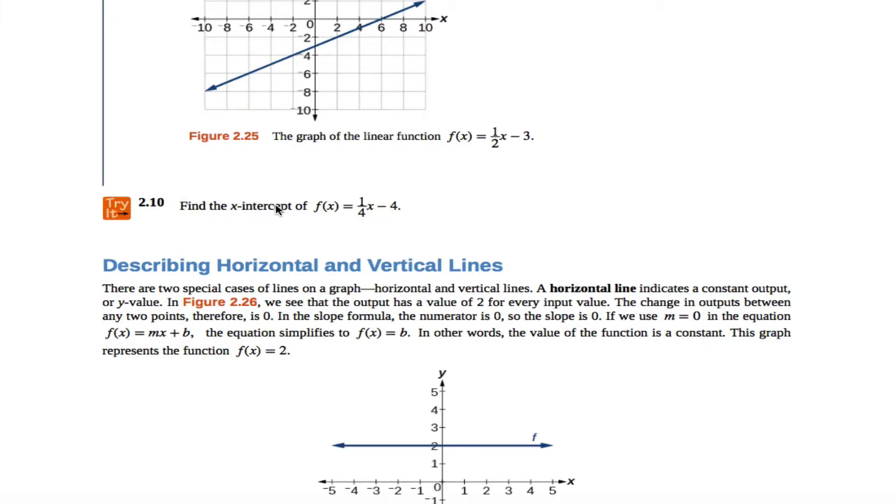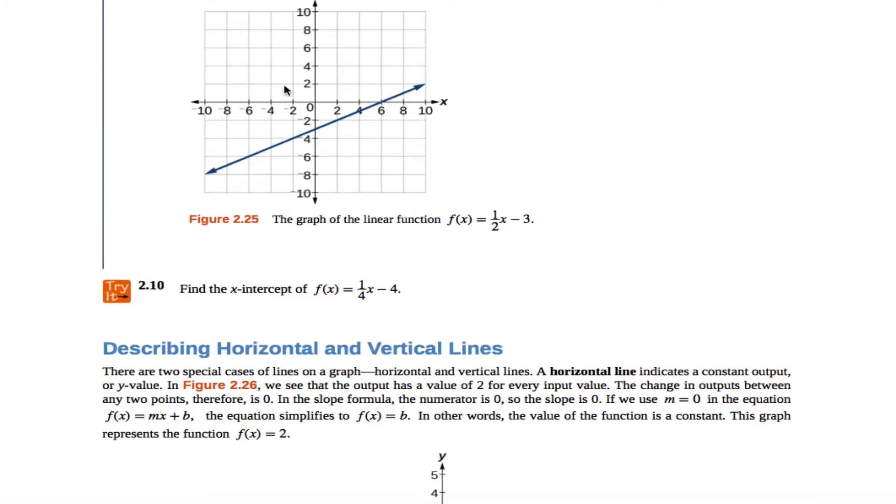The x-intercept is where we cross the x-axis. Here's a picture of the x-axis right here. If a graph crosses the x-axis, so this isn't the graph of 2.10, this is a different graph, but if a graph crosses the x-axis, that point is very special in that the height of that point is 0. The y-coordinate of that point is 0.